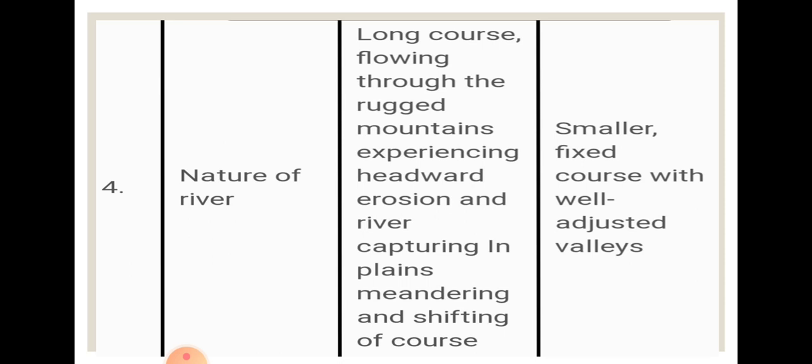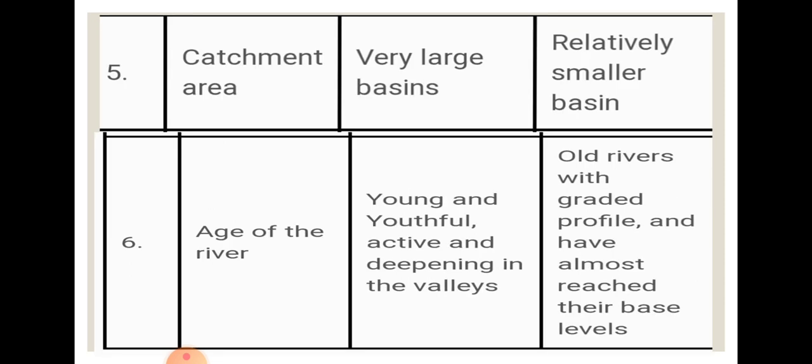The next aspect is the nature of the river. Himalayan rivers generally have long courses; they flow through rugged mountains and cause a high amount of erosion. These rivers also undergo river capture, form meanders, and change their course — this is called shifting of course. Peninsular rivers, however, are smaller rivers with a fixed course and well-adjusted valleys.